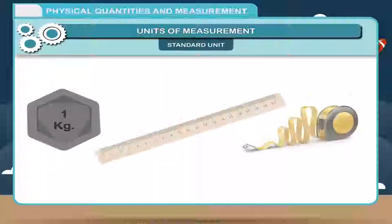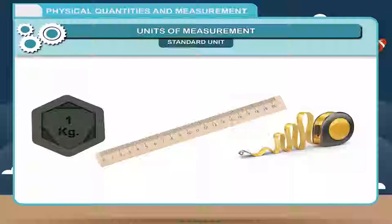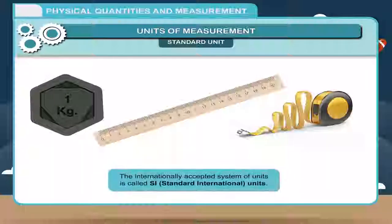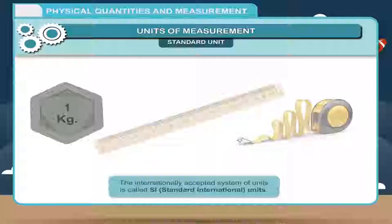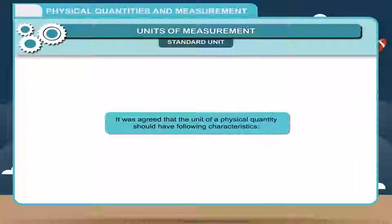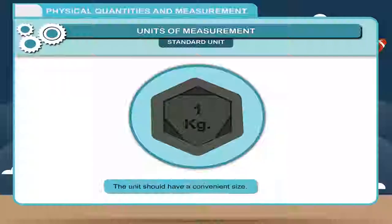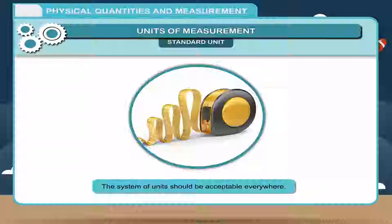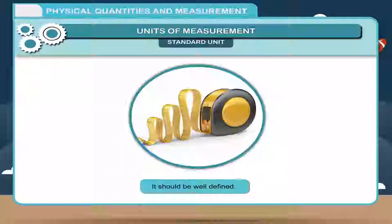Standard unit: To overcome variations in measurement, the need for a system of standard units was felt. A unit which is acceptable by a majority of people as a basic unit of measurement is called a standard unit. The internationally accepted system of units is called SI (Standard International) units. This system was adopted in October 1960 at the 12th International General Conference on Weights and Measures. It was agreed that the unit of a physical quantity should have the following characteristics: 1. The unit should have a convenient size. 2. Its value should not change with respect to place and time. 3. The system of units should be acceptable everywhere. 4. It should be well defined.